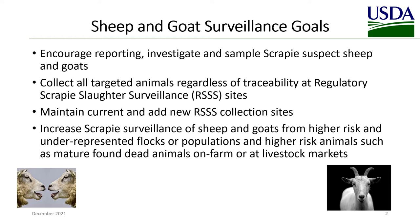For regulatory scrapie slaughter surveillance, note that we are no longer targeting black-faced sheep, Mondales, or Southdown breeds of sheep. Targeted animals include all sheep and goats ages 2, 3, 4, and 5 years of age based on dentition, regardless of traceability, and any mature animal that dies prior to slaughter or is condemned on antemortem inspection, is non-ambulatory, exhibits central nervous system signs, or exhibits intense rubbing, abrasions, or rough, thickened, or hyperpigmented skin.